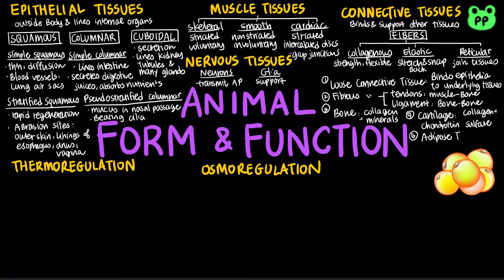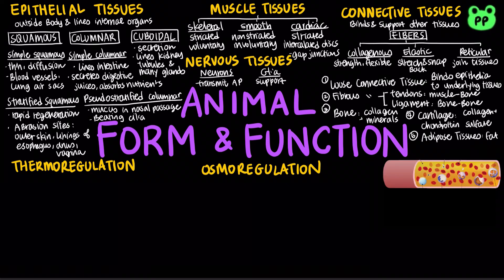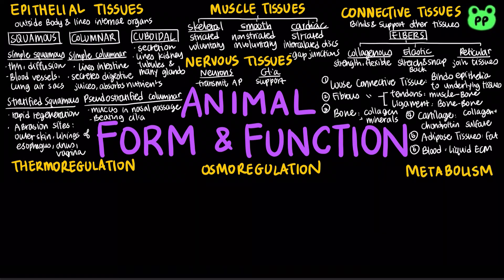Adipose tissue stores fuel as fats. It also pads and insulates the body. Blood is composed of blood cells suspended in blood plasma, which is a liquid extracellular matrix consisting of water, salts, and dissolved proteins.